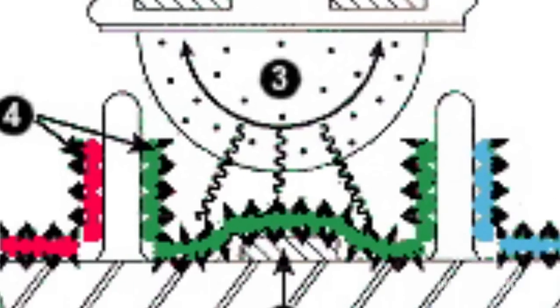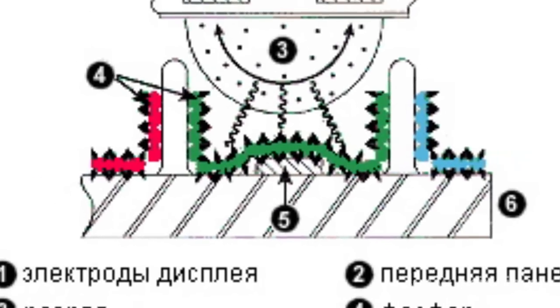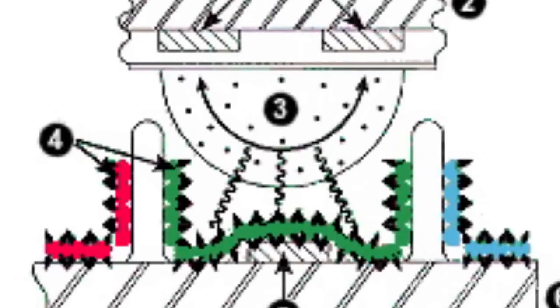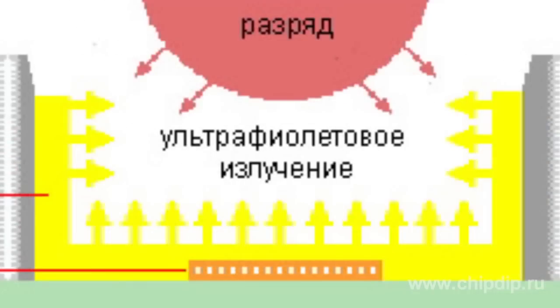In color plasma displays, each pixel of the screen consists of three identical microscopic enclosures, which contain the inert gas and have two electrodes — the front and the rear one. After high-frequency voltage is applied to the electrodes, high-frequency capacitance discharge occurs. In the inter-electrode space, plasma is generated. It emits ultraviolet light that falls on the luminophores in the bottom of each enclosure. The luminophores emit one of the primary colors: red, green, or blue.